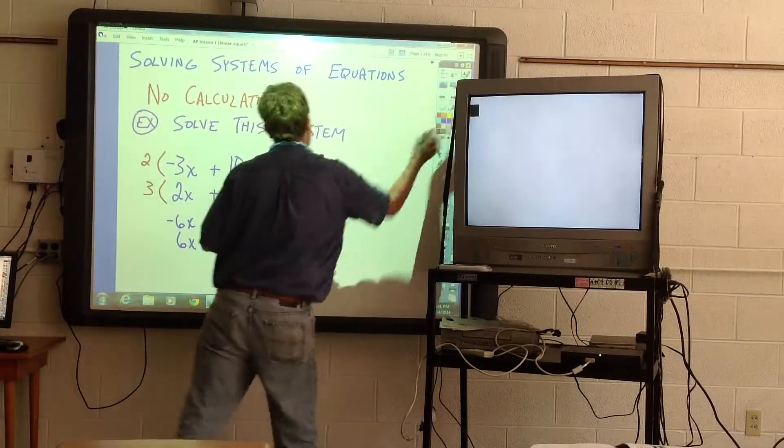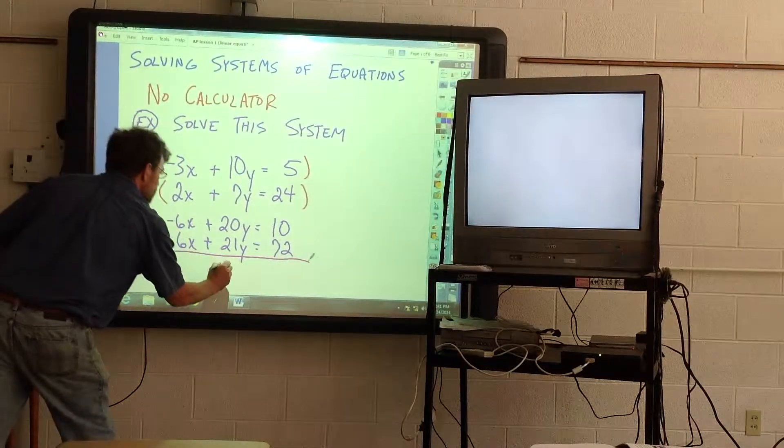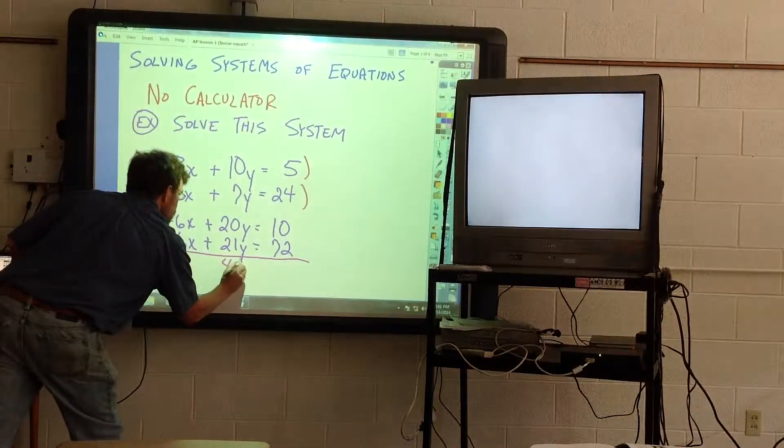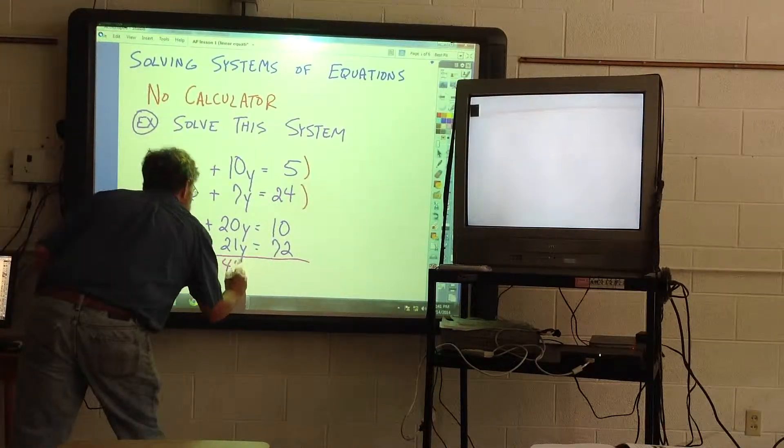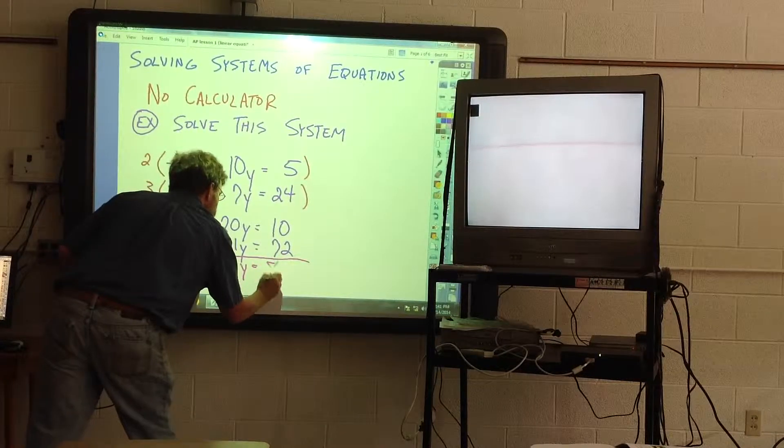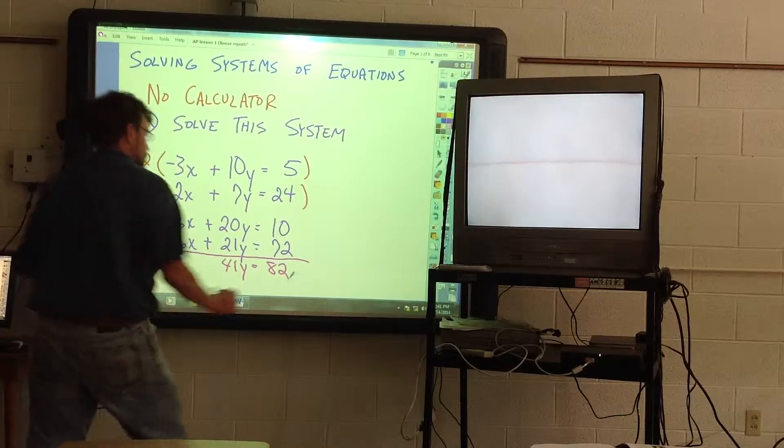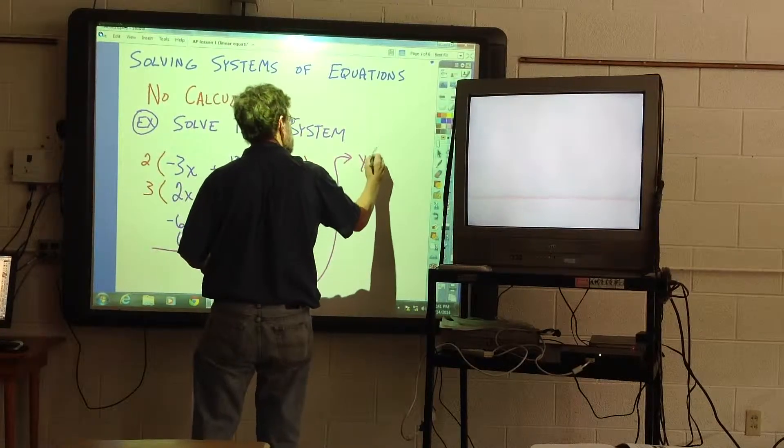So if I add, add down here, the X is canceled, and I will get 41Y equals 10 plus 72 equals 82, and therefore we get Y equals 2.